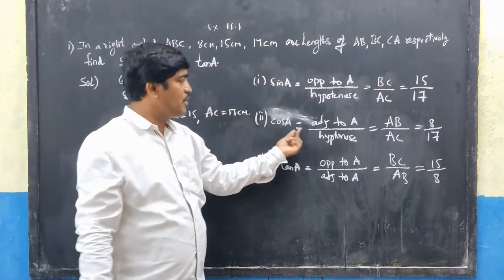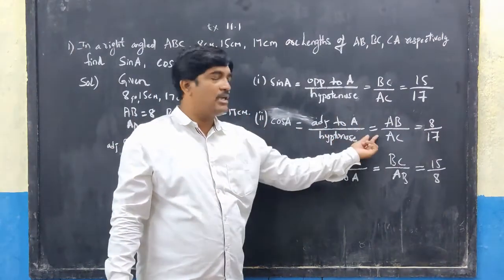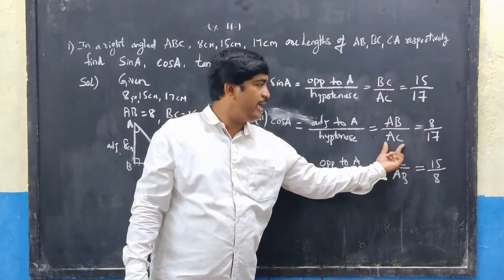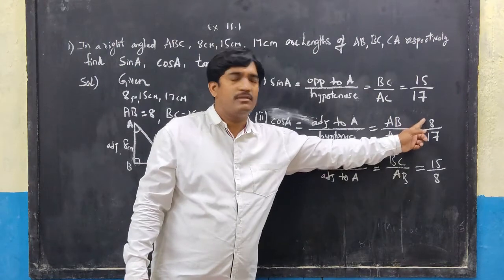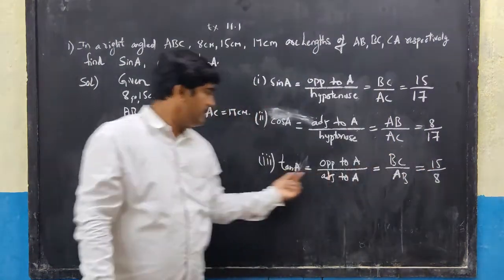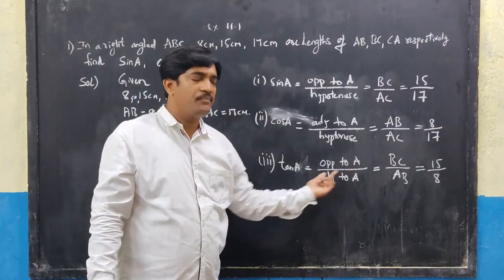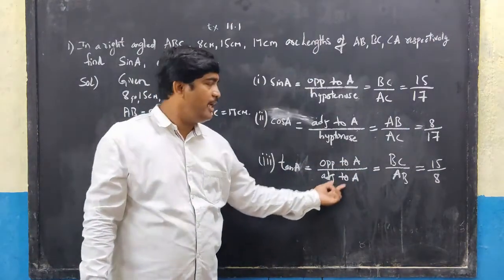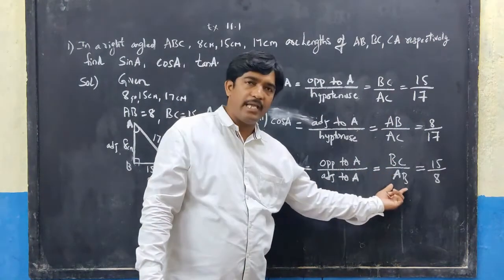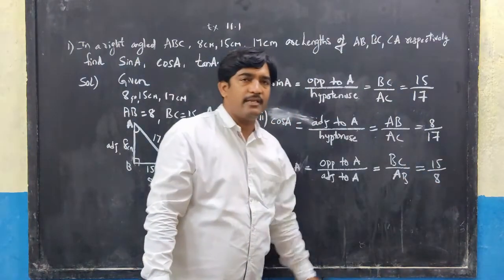Cos A is nothing but adjacent to A by hypotenuse. Adjacent to A is AB and hypotenuse is AC. So cos A = AB/AC = 8/17. Similarly, tan A is nothing but opposite to A by adjacent to A. So tan A = BC/AB = 15/8.